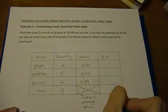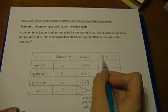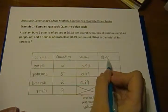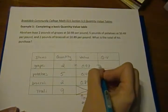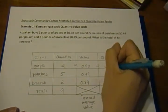So now on to filling in our QV column. So this column is our quantity times our value. So it's going to be two times the ninety-eight cents, which is a dollar ninety-six.